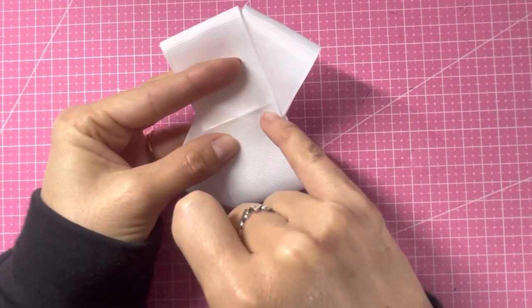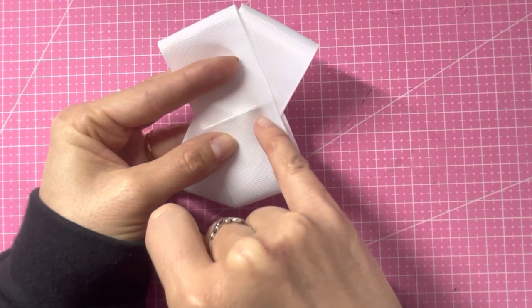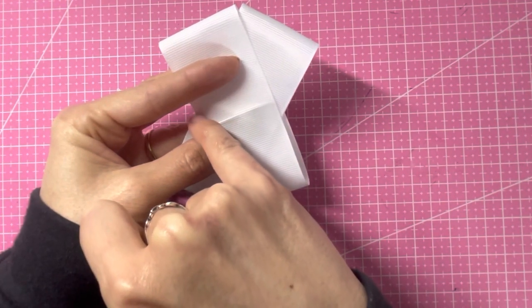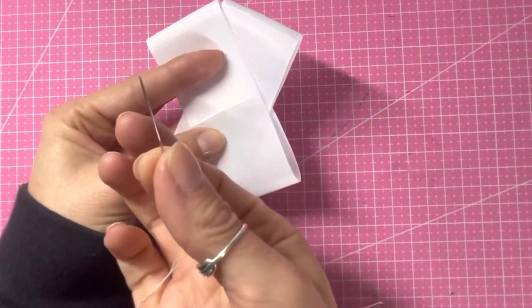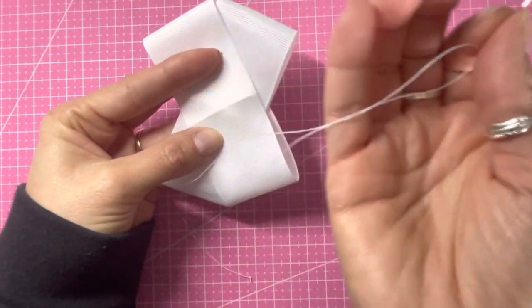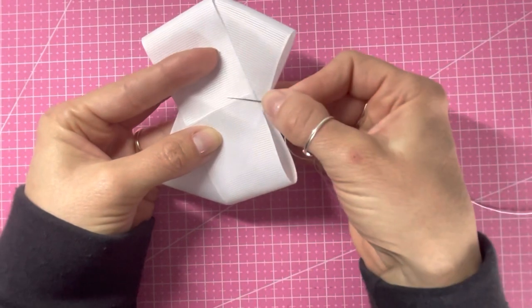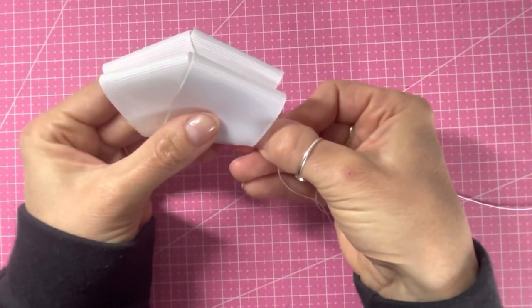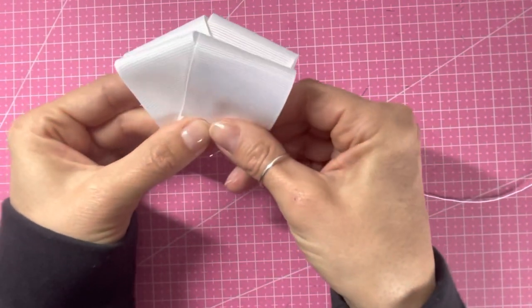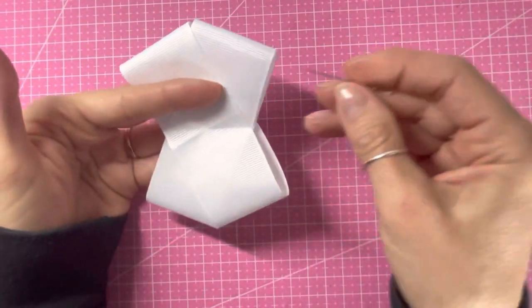And now we're going to sew across the middle here from this corner across to this corner where they just overlap. So I've got a needle here threaded with some strong thread and a knot in the end. If you want you can fold it at this point and again give it another squeeze so you can see where you're stitching, or you can just do it by eye.